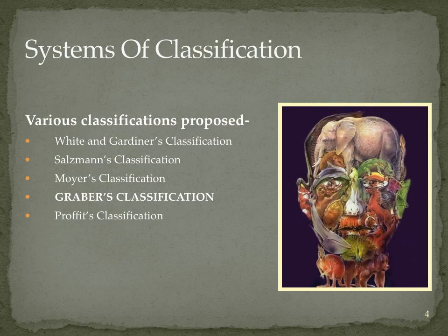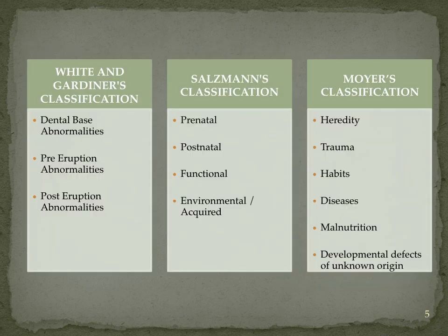There are various systems of classification proposed by different authors. According to White and Gardner's classification, it is classified according to denture-based abnormalities, pre-eruption and post-eruption abnormalities. Salzman has categorized it as prenatal, postnatal, functional and environmental, whereas Moyers has classified it according to heredity, trauma, habits, diseases, malnutrition and developmental defects of unknown origin.